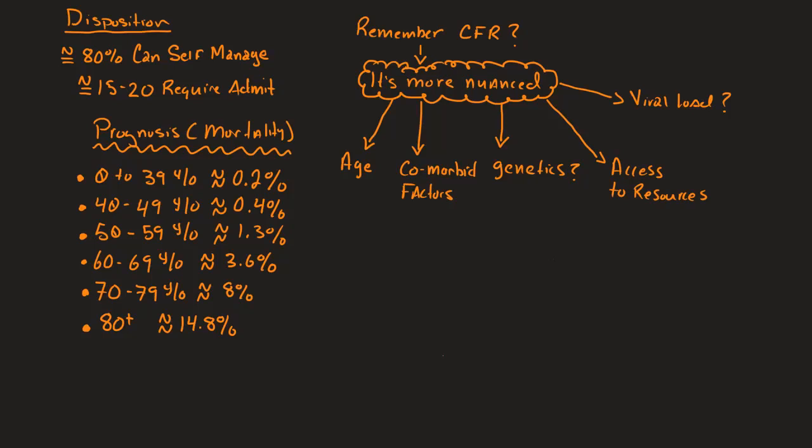Good day everybody, this is Chris back again with the Ancient Scholar and this is going to be COVID-19 Part 5 in a series of videos covering the high yield or some of the high yield information surrounding the COVID-19 pandemic that we're dealing with and this information will be fairly contemporary as of 17 March 2020. Today I'm going to be talking about patient disposition.